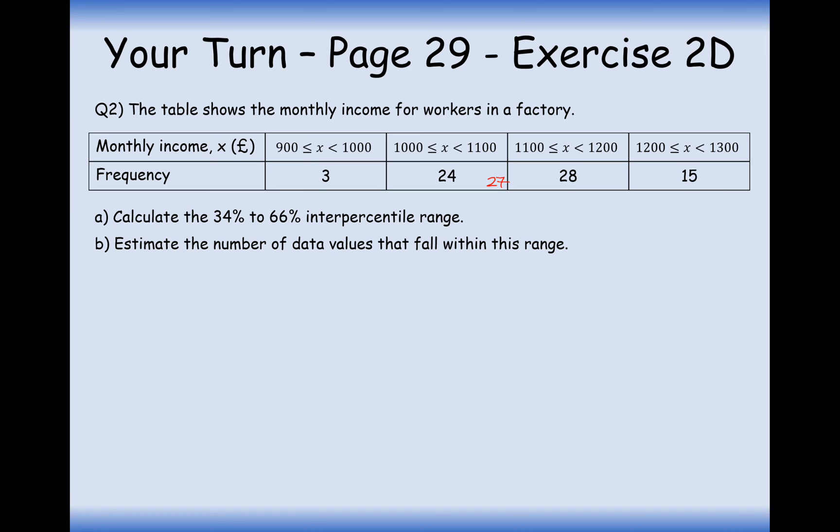So 27, 27 add 28, gives me 55. And then 55 add 15 is 70. So in this case here, to find the 34 percentile range, I'm going to do 34 divided by 100 times by 70. And this will give me the data value that I'm going to receive. So 0.34 times 70, which will give me 23.8. So I want to find the 23.8 data value. So this is going to definitely be in this group here. So applying my formula, that's lower bound plus place in the group divided by group frequency times by class width. This is going to be 1,000.